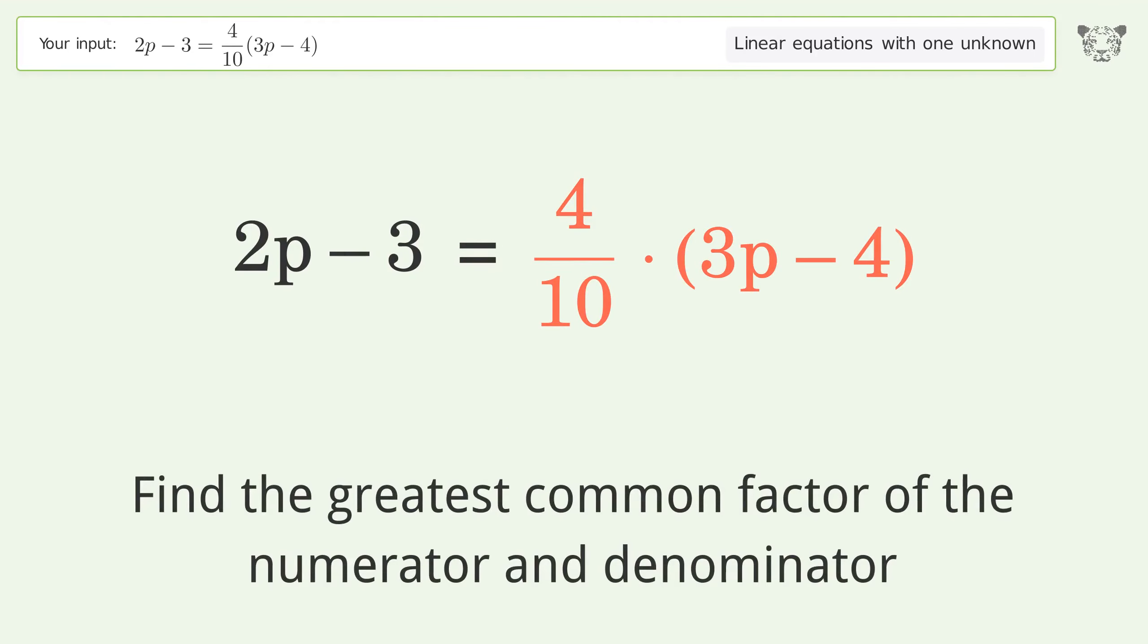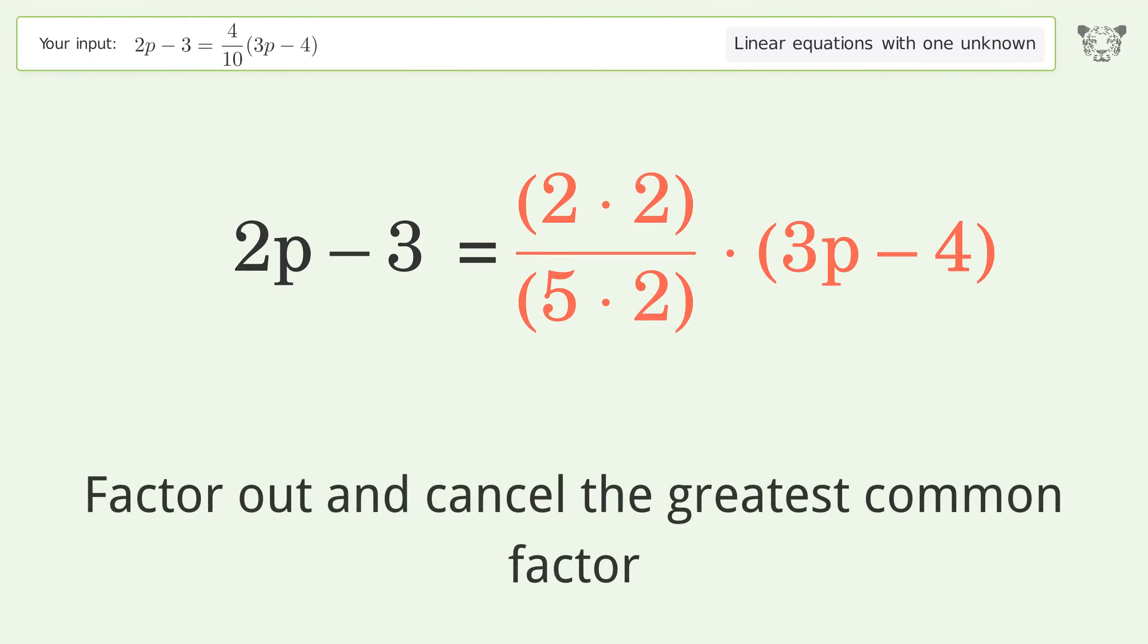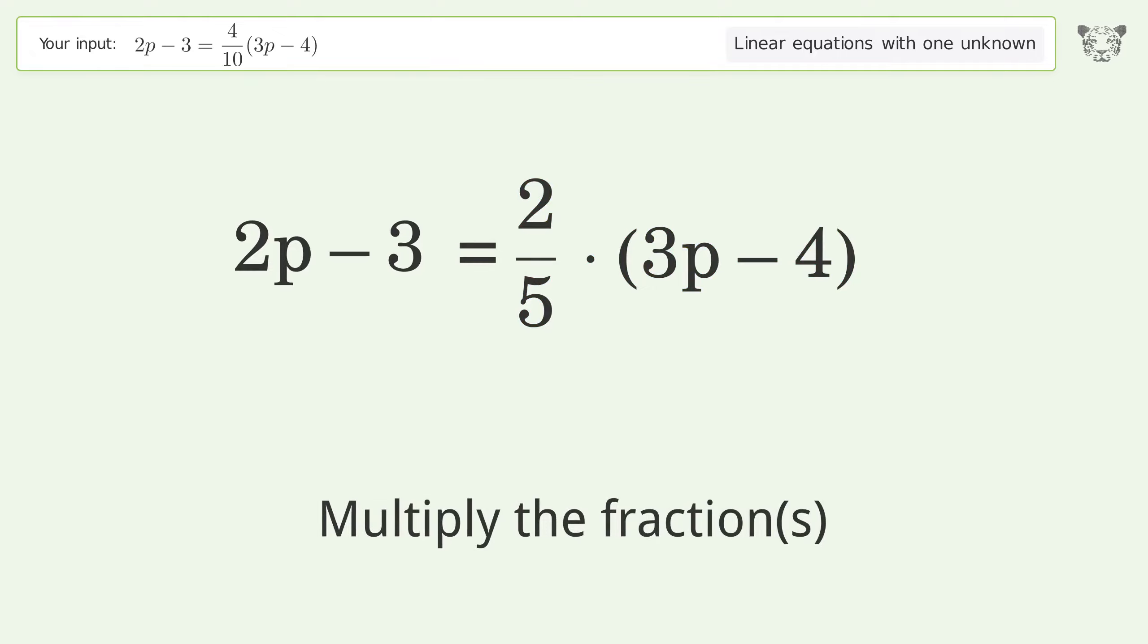Find the greatest common factor of the numerator and denominator. Factor out and cancel the greatest common factor. Multiply the fractions.